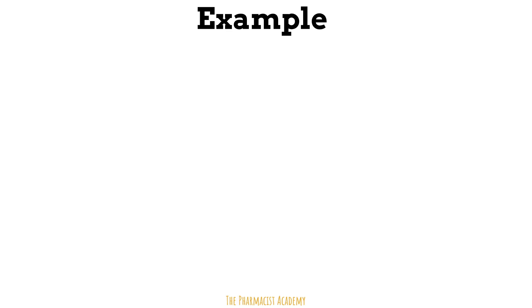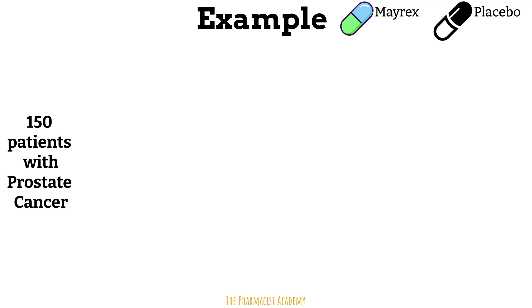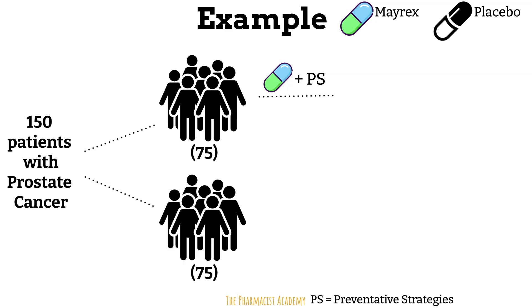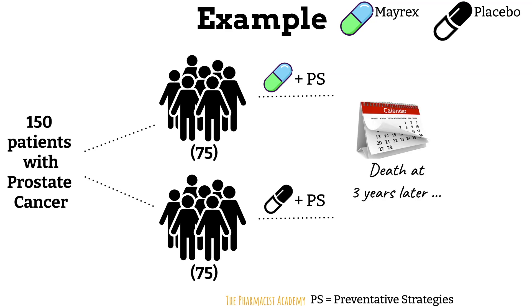Let's say we are conducting a study evaluating the efficacy of our new drug Marex versus placebo in prostate cancer patients. We had a total of 150 patients with prostate cancer — 75 received the drug plus preventative strategies, and 75 received placebo plus preventative strategies. We evaluated the number of patients who died after three years. In the intervention group, 11 died, and in the placebo group, 33 died.